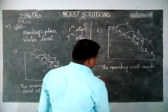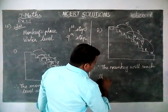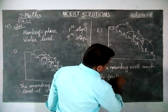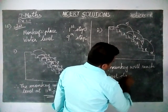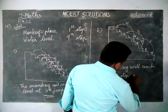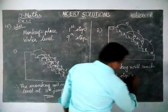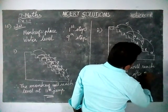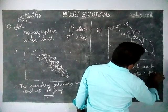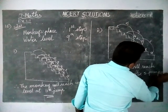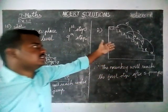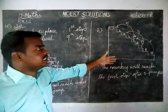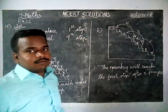Therefore, the monkey will reach the first step after 5 jumps. If it jumps 5 jumps, it will reach the first step. Thank you.